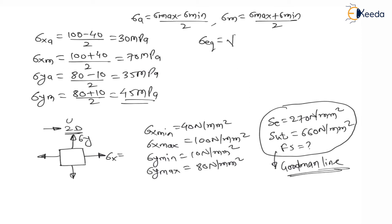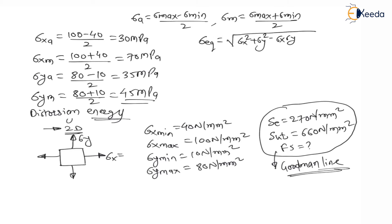For combined equivalent stress, we always use the distortion energy theory (Von Mises theory). As per distortion energy theory, the equivalent stress for 2D loading with both normal stresses is: σ_eq = √(σx² + σy² − σx·σy). To find the equivalent mean stress: σm_eq = √(σxm² + σym² − σxm·σym).